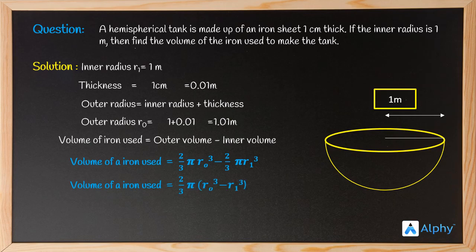Now just substitute the values. Write ro as 1.01 and r1 as 1. After calculation, you get the volume of iron used as 0.0634 meter cube. So this is our final answer.